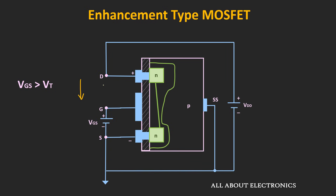This can also be explained another way: once we apply the drain-to-source voltage, the voltage difference between the gate and drain terminal reduces to Vgs minus Vds. Since the source and substrate are grounded, this difference equals Vg minus Vd. As Vd increases, the difference between the two voltages reduces. The gate terminal towards the drain side is therefore less positive, attracting fewer electrons, which is why the channel width becomes narrower from source to drain.